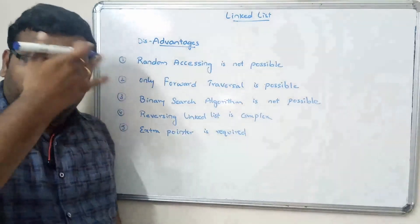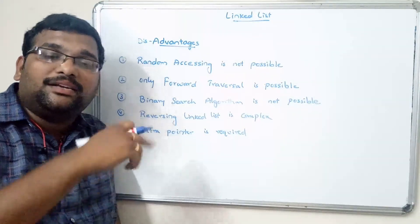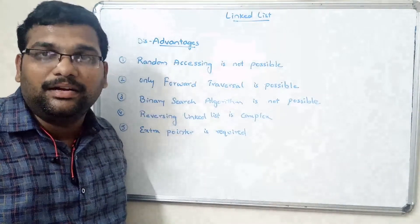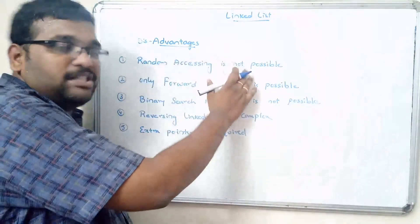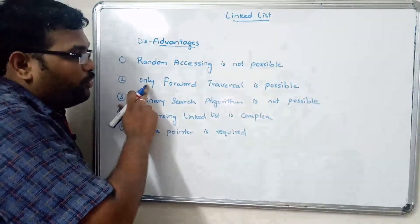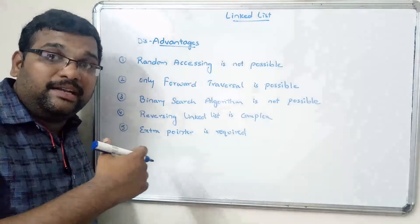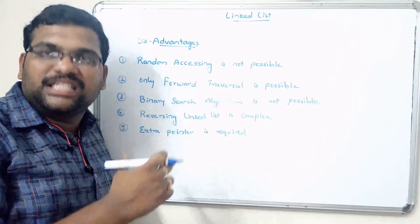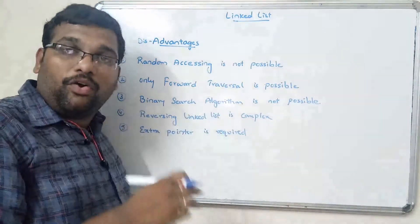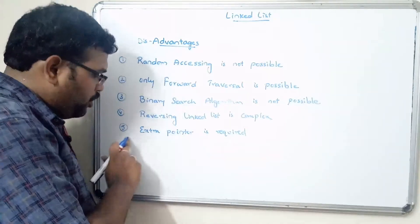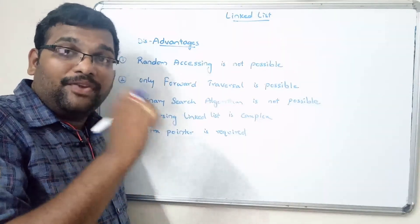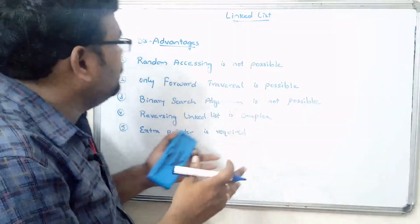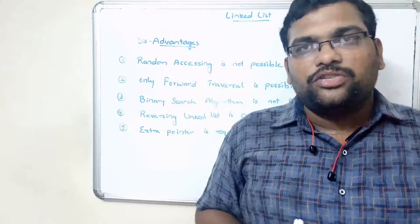Another disadvantage is that an extra pointer is required to store the address of the next node, which adds overhead. To summarize the disadvantages: random access is not possible; only forward traversal is possible; binary search is not applicable; reversing the list is complex; and an extra pointer field is required in every node.